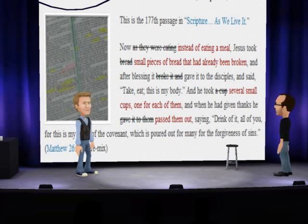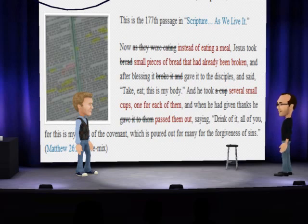And he took several small cups, one for each of them, and when he had given thanks he passed them out, saying, Drink of it, all of you, for this is my blood of the covenant, which is poured out for many for the forgiveness of sins.